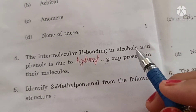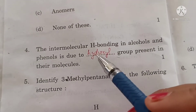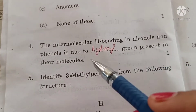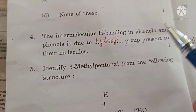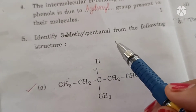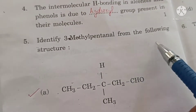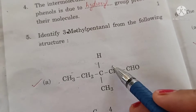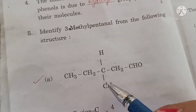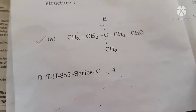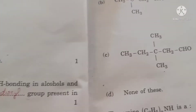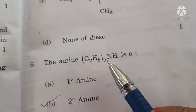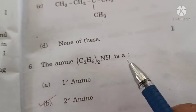The intermolecular hydrogen bonding in alcohols and phenols is due to the hydroxyl group present in their molecules. Identify 3-methylpentanal from the given structures — option A is the correct answer, this is 1,2,3-methylpentanal.